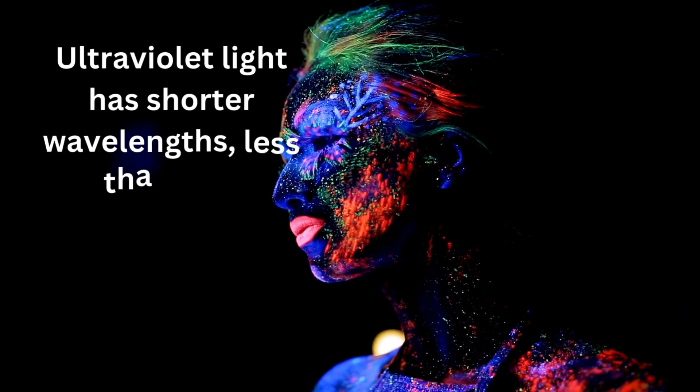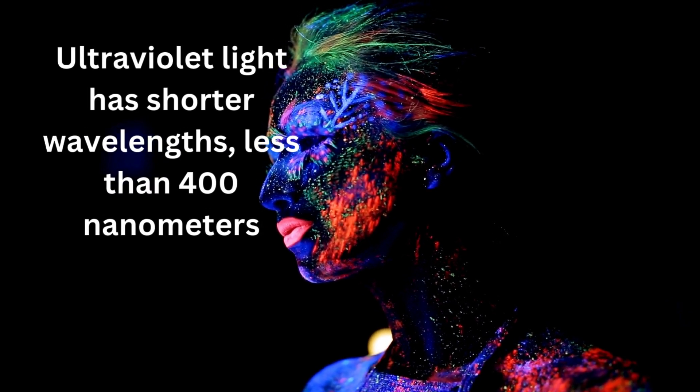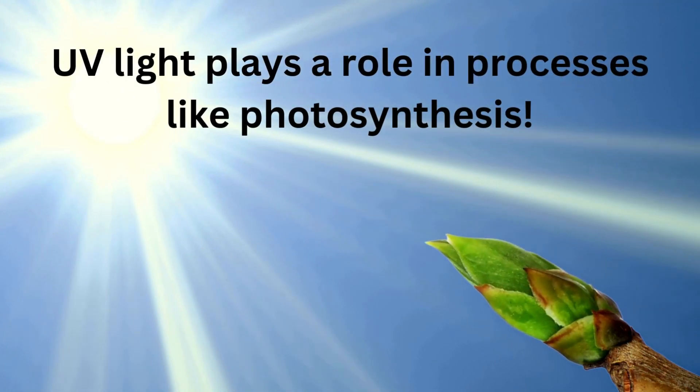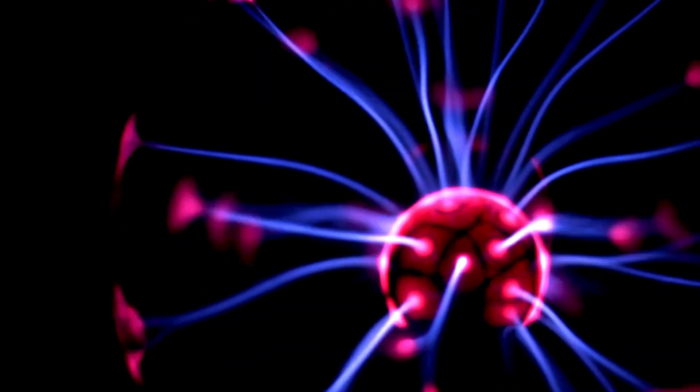Ultraviolet light has shorter wavelengths, less than 400 nanometers. While too much UV light can be harmful to our skin, it also plays a role in processes like photosynthesis.